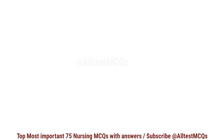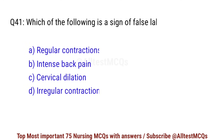Question number 41. Which of the following is a sign of false labor? Right option is D: Irregular contractions.